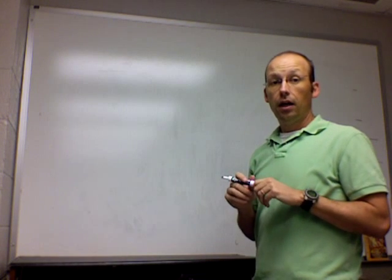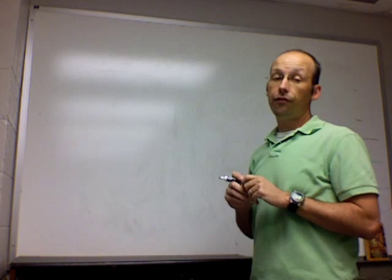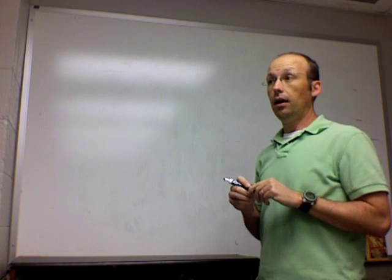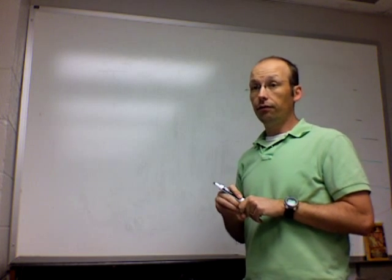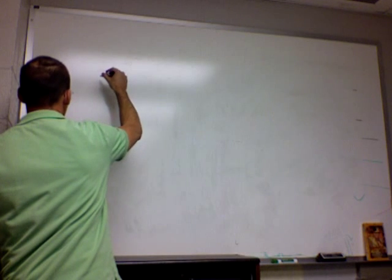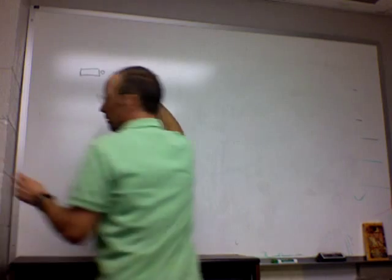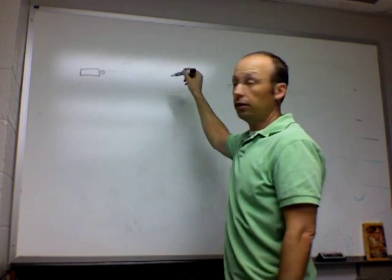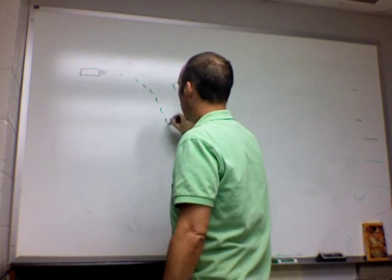In projectile motion, the key thing is we define projectile motion to be an object moving only under the influence of gravity. So let's just start from this case. Suppose I take a ball and I shoot it horizontally. It's going to go like that.